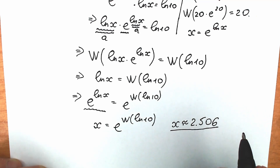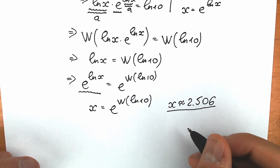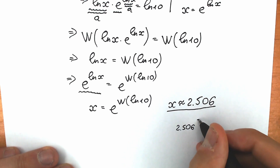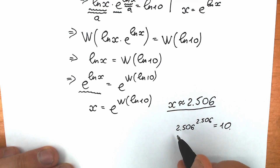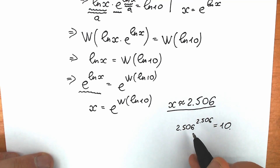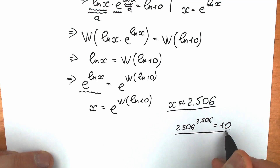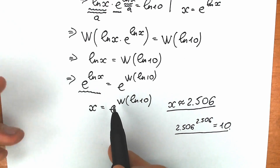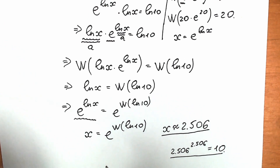This is our approximate answer and you can easily check it. If you want proof and don't trust me, raise 2.506 to the power 2.506 in your calculator and you will get 10. I'm 99% confident this is absolutely correct because we are using basic Lambert W function — not finding hard ways, just basic steps.